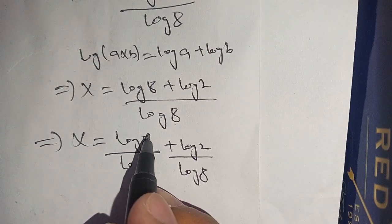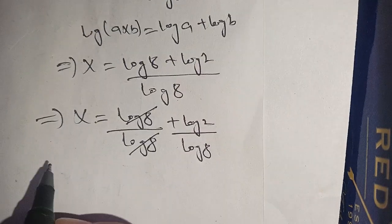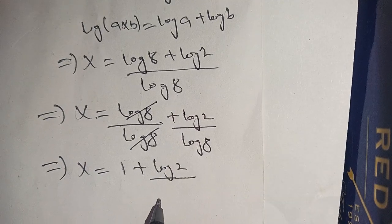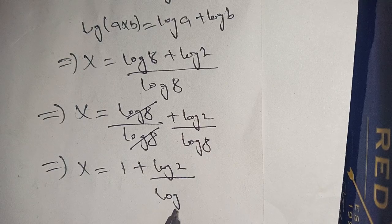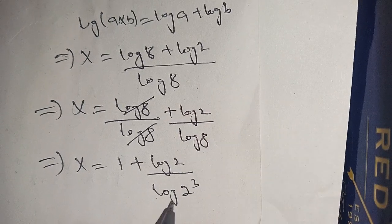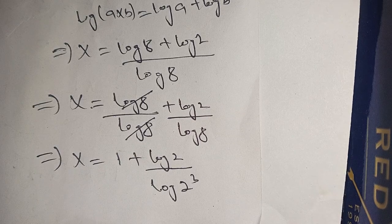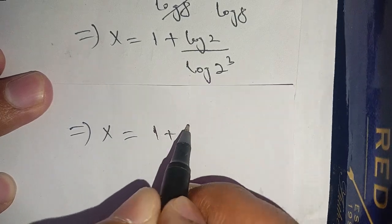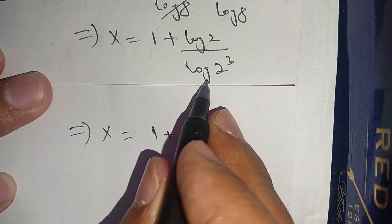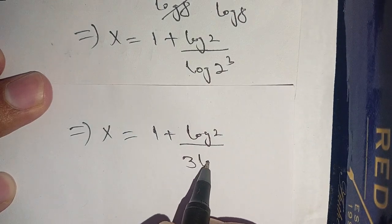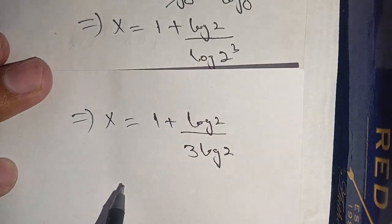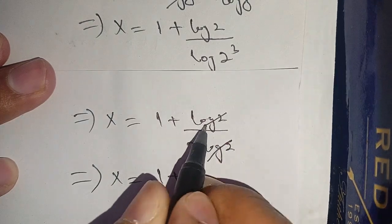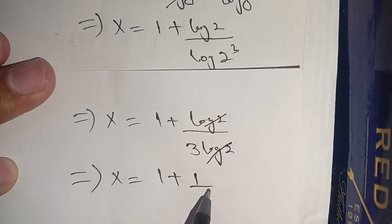Now we can cancel log of 8 with log of 8, so our equation becomes x is equal to 1 plus log of 2 divided by log of 8. Since 8 can be written as 2 power 3, log of 8 becomes log of 2 power 3, which equals 3 log of 2. So x is equal to 1 plus log of 2 divided by 3 log of 2, and log of 2 cancels, leaving 1 divided by 3.